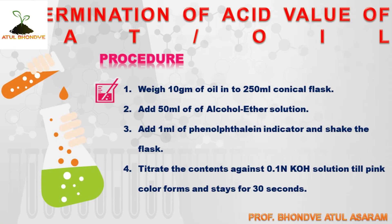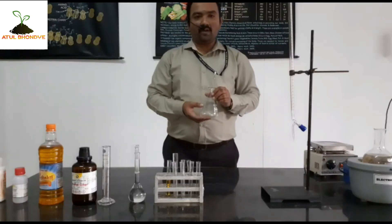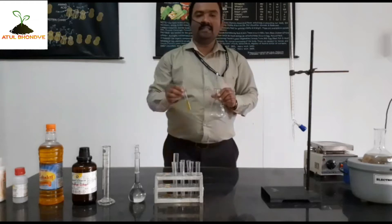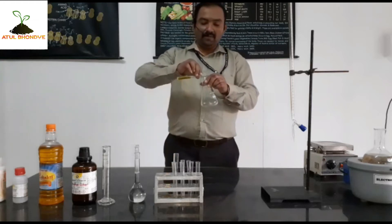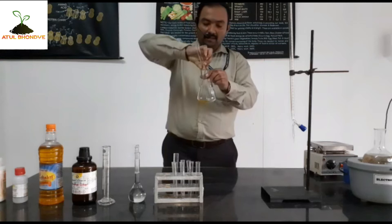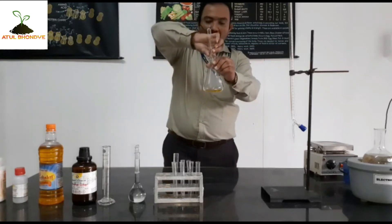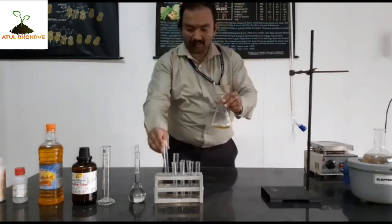Procedure for today's practical: Take a 250 ml clean and dry conical flask. Into this conical flask, add 10 grams of fat or oil sample. We have already measured the 10 grams of oil sample and we are going to transfer this oil sample into the conical flask.